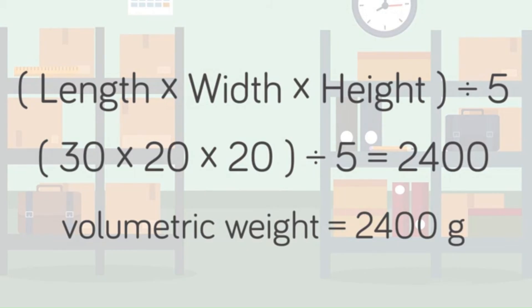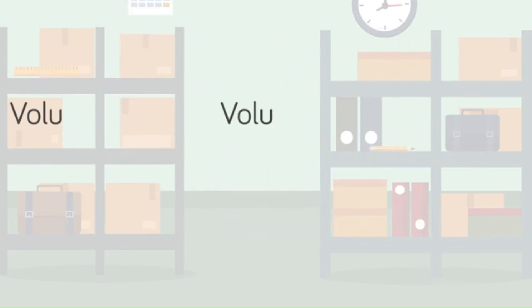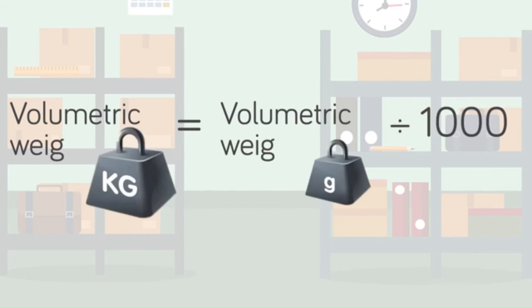So our package's volumetric weight is 2400 grams. If you want to change the volumetric weight to kilograms, then divide the volumetric weight, which is in grams, by 1000. We have done this because 1 kilogram has 1000 grams.